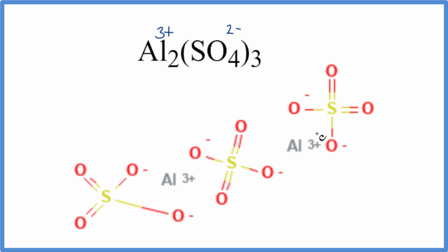I have this image here from PubChem, from the National Institutes of Health here in the US. It shows the two aluminum ions, each one is 3+, and then the sulfate ions - 1, 2, 3. You can see they each have two negative charges.